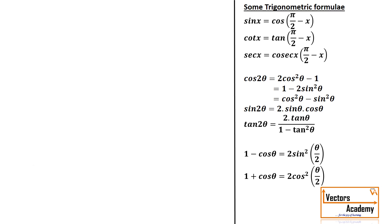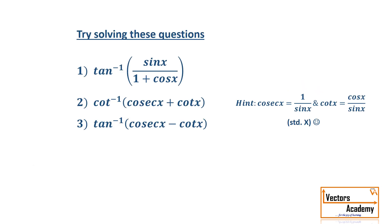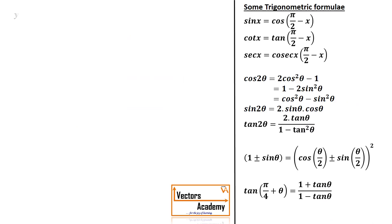Now these are some questions which you can try on your own. Moving further, we have tan inverse of cos x upon (1 plus sin x). The formula for cos 2θ is cos²θ minus sin²θ — it's the half angle formula where 2θ becomes θ.